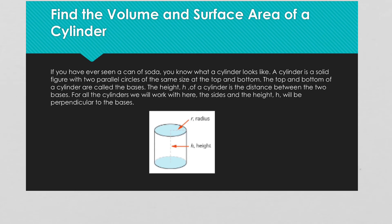Now we're going to find the volume and surface area of a cylinder. This is like if you have a Coke can and you're wanting to fill it up with Coke — volume is how much Coke can fit in there. Or if you want to wrap it with wrapping paper, how much it would take to cover it — that's the surface area. We're dealing with radius and height.